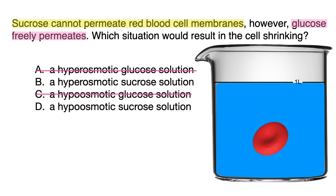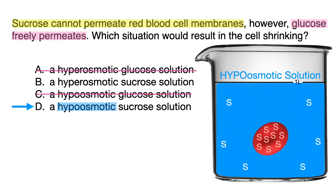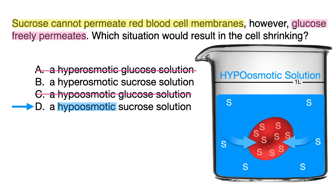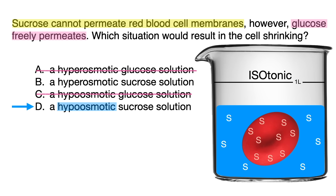Now between B and D, the hypoosmotic sucrose solution in answer choice D is the case where we had a hypertonic cell — higher sucrose concentration inside the cell and low outside, making it a hypoosmotic solution. In this case, water flows into the cell toward the higher sucrose concentration for the sake of reaching isotonicity, causing the cell to swell, not shrink — so eliminate D.